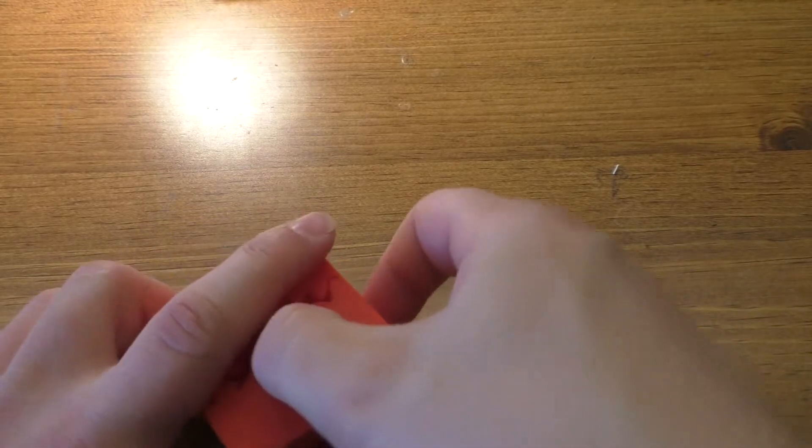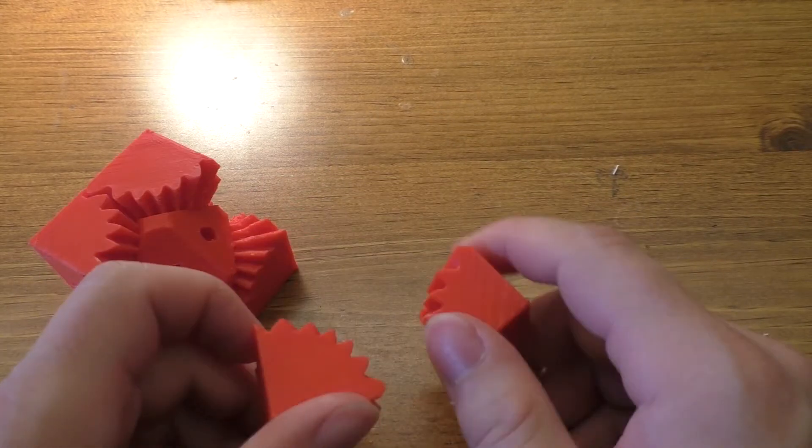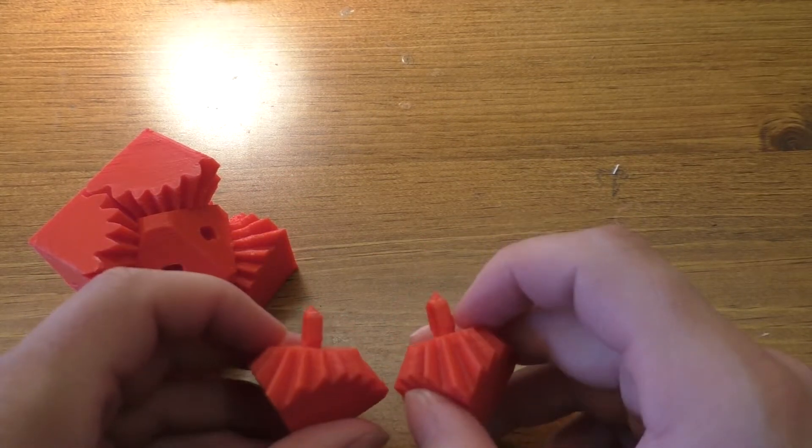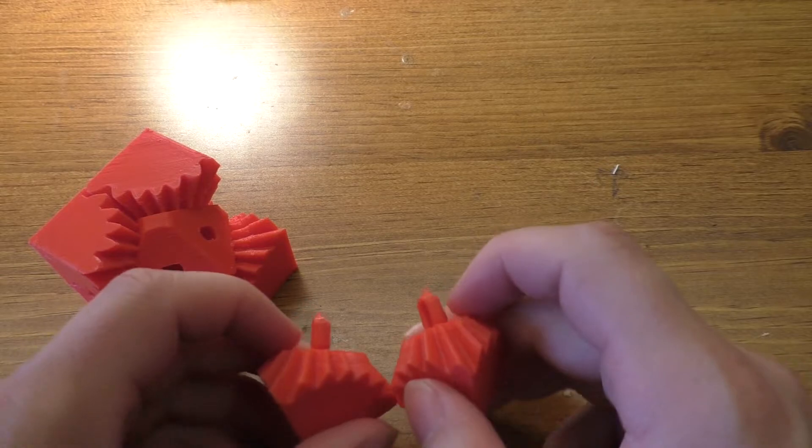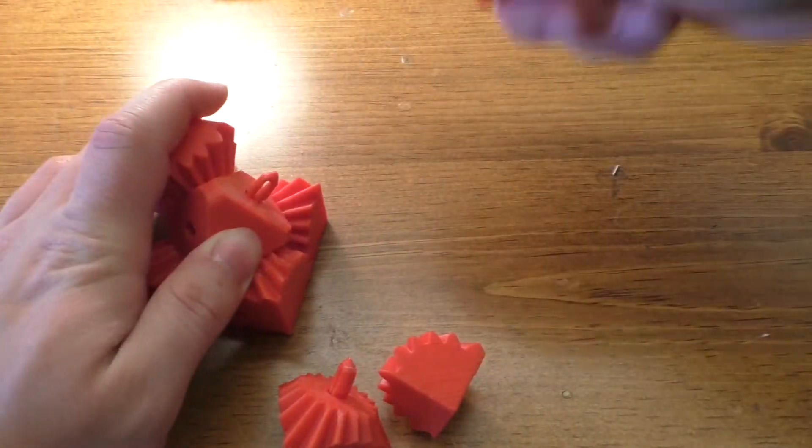This thing does print in pieces, so I can pull this apart here. You've got two different sizes, a corner piece. You've got the pins here, the pins print separately. I can't seem to get one of them to pull out here.